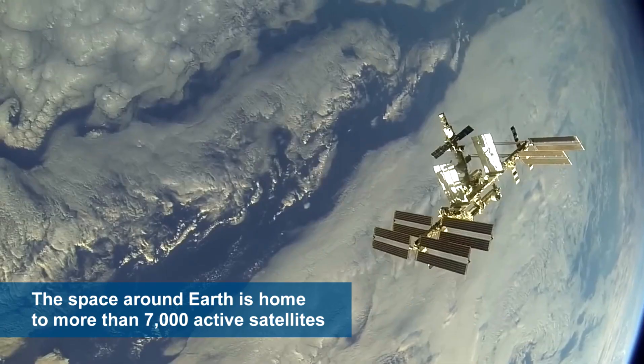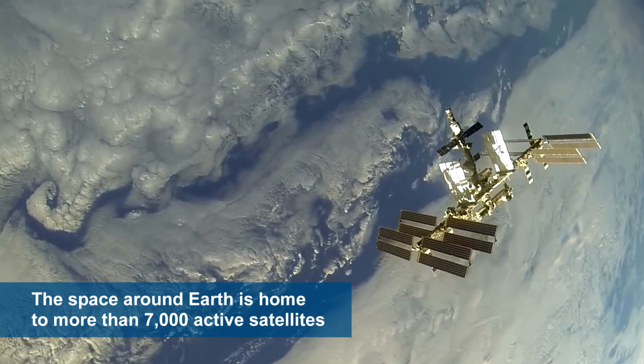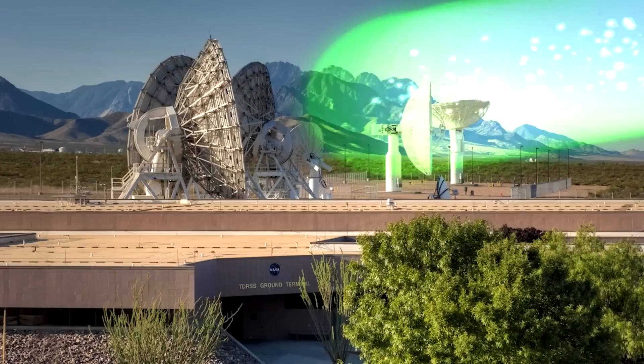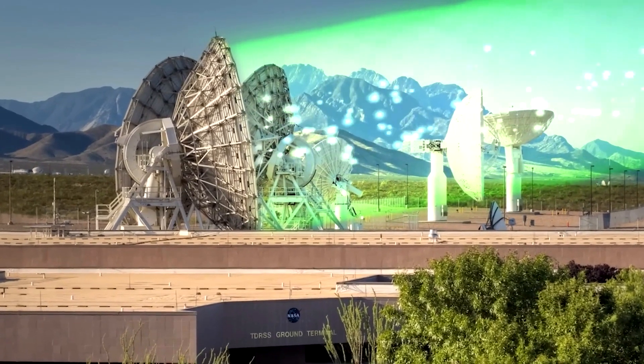The space around Earth is home to more than 7,000 active satellites. The space domain is complex and difficult to understand.